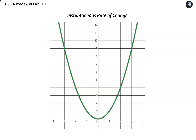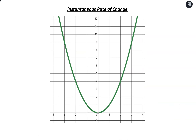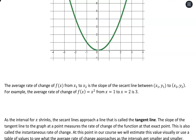We're going to move from average rate of change to instantaneous rate of change — moving away from secant lines and into tangent lines. We'll tie it back to this graph of x squared. The average rate of change looks at our function from one x value to another, and that average rate of change gives the slope of the secant line between those two coordinates.